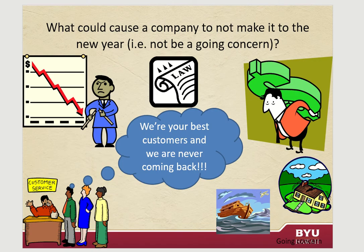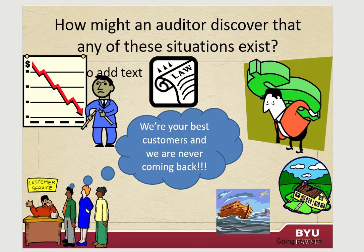What could cause a company not to make it in the new year? A declining economy — for example, coronavirus putting them out of business as a non-essential business forced to close their doors. If that were to happen, we'd be worried about the audit for that year. Other factors include a lawsuit against them, their customers going bankrupt, a huge flood or earthquake, or simply too many financial obligations.